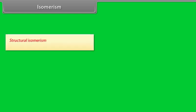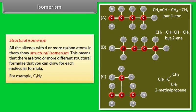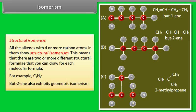Isomerism. Structural isomerism: all alkenes with four or more carbon atoms show structural isomerism. This means that there are two or more different structural formulae that you can draw for each molecular formula. For example, with C4H8, it isn't too difficult to come up with three structural isomers. There is, however, another isomer — but-2-ene also exhibits geometric isomerism.